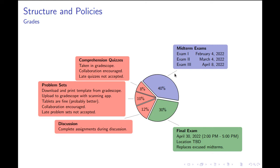Forty percent of your grade consists of three midterm exams — in-person written exams held during lecture. The first is on February 4th, the second on March 4th, and the third on April 8th, all on Fridays. Your average on those three midterms comprises 40% of your grade.